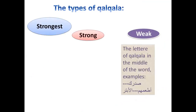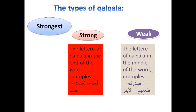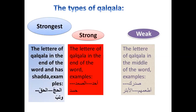Weak Qalqala: the letter of Qalqala appears in the middle of the word. Strong Qalqala: the letter of Qalqala appears at the end of the word. Strongest Qalqala: the letter of Qalqala appears at the end of the word and has a Shaddah on it.